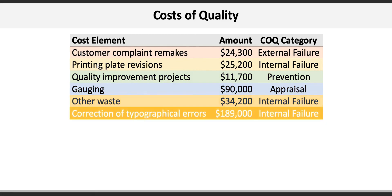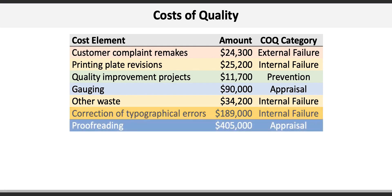The next item is correction of typographical errors, or typos. At $189,000, that's a very large cost and should probably raise a red flag — maybe the company should invest in spell checking software. Proofreading is also a form of inspection, so it's an appraisal cost. At $405,000, it's pretty big but likely a necessary activity given the nature of the work.